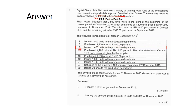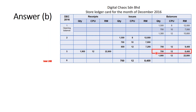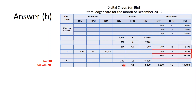On 8th December, 1,400 units were issued to the production department. We issue the oldest batch first — 700 units at RM12. We still need another 700, so we issue from the next batch of 1,900 units at RM12, taking only 700. The balance remaining from that batch is 1,900 − 700 = 1,200 units at RM12.